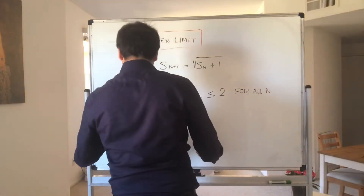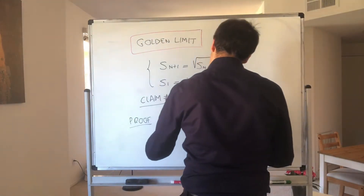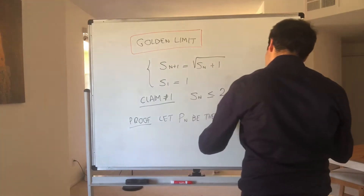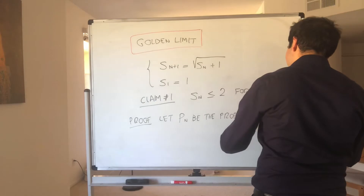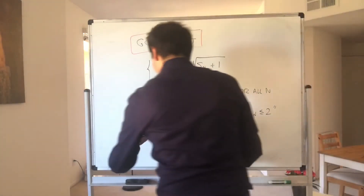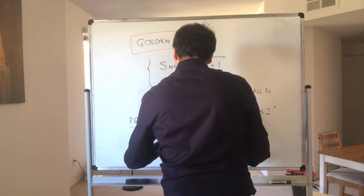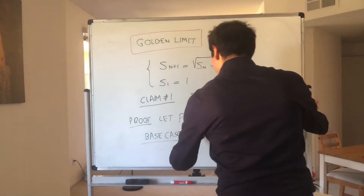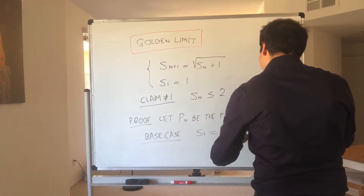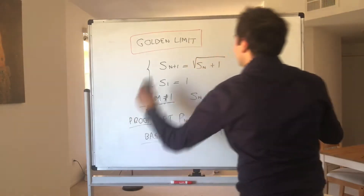Proof: Let Pn be the proposition that Sn is less than or equal to 2. Let's do the base case. We have S1, which is 1, and 1 is less than or equal to 2. So the base case is done. Now let's do the inductive step.